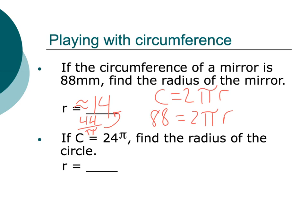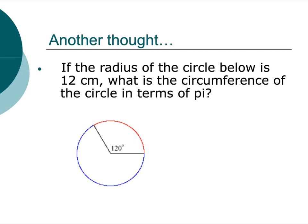Well, again, same type of idea. 2πr is equal to 24π. I cancel out my π's, divide by 2, I get r equals 12. Awesome. Let us continue. Alright, down here, if the radius of the circle below is 12 centimeters, what is the circumference of the circle in terms of π? Well, the circumference would be 2π times 12, so 24π.